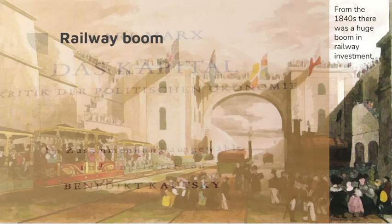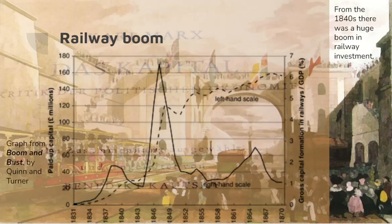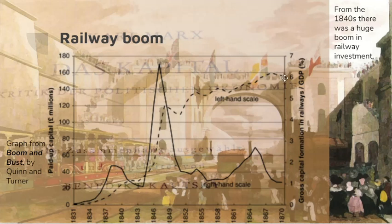Taking a graph from the book Boom and Bust by Quinn and Turner: the solid dark line is the share of gross national product going into capital accumulation in the railways, peaking in the mid-1840s at around 6% of GDP being invested in railways. That meant the capital stock rose — the dotted line is the capital stock invested in railways, starting very low in millions and rising by the 1870s to £160 million, which was a huge sum of money in those days.